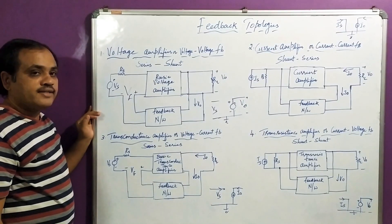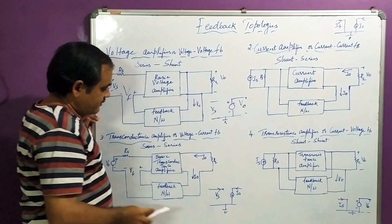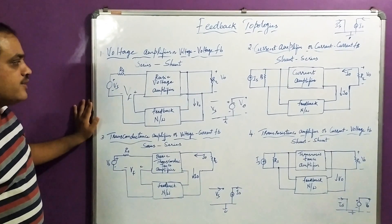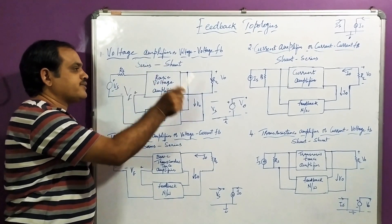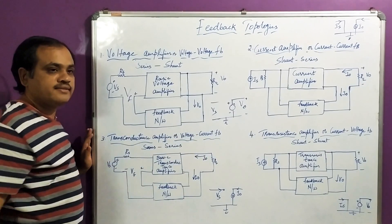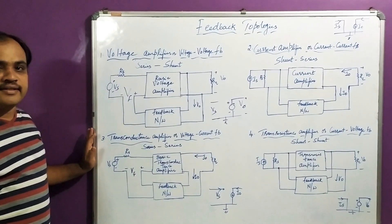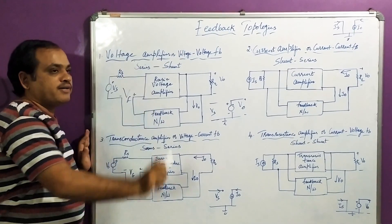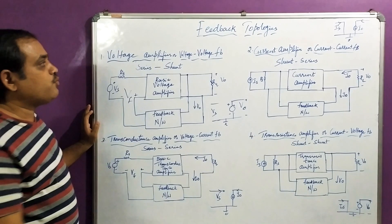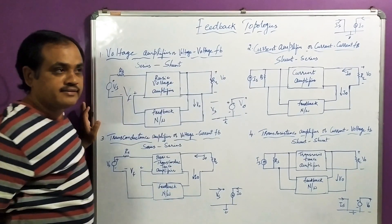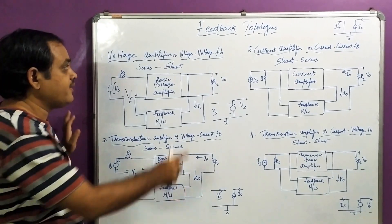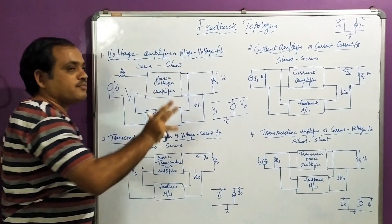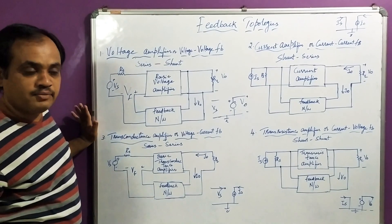The first one is voltage amplifier, the second one is current amplifier, the third one is transconductance amplifier, and the fourth one is trans-resistance amplifier. If you learn one structure or one topology easily, the remaining ones are simple adjustments of that. The first one — voltage amplifier — is also called as voltage-voltage feedback structure. Here input is also voltage and output is also voltage. This feedback topology is called as voltage-voltage feedback topology.